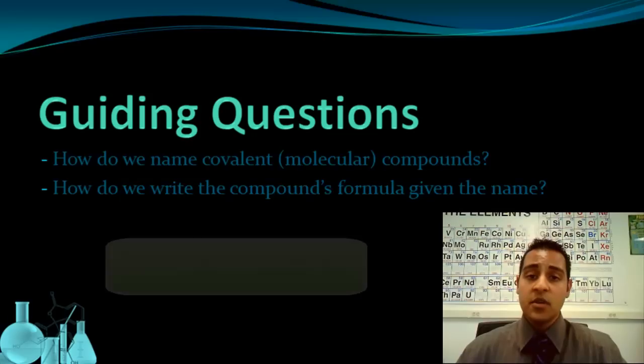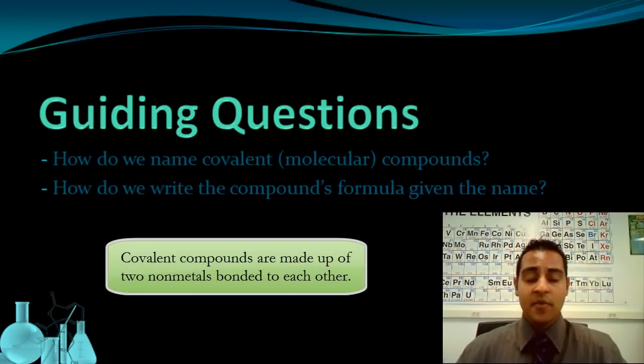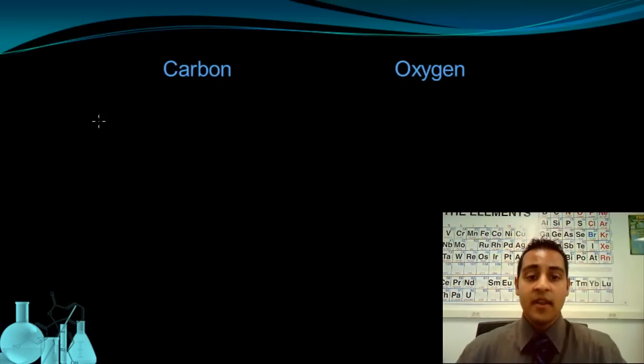To briefly review, covalent compounds are made up of two non-metal elements bonded to each other, such as carbon and oxygen.